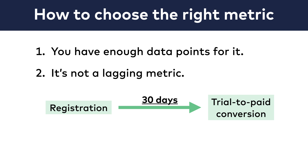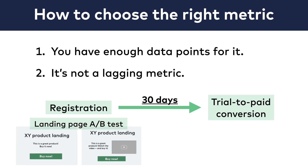The user starts the trial, but whether she will pay or not, we will only learn that 30 days later. So this is not a good number to look at in your A-B test, because you will have to wait 30 days after starting the test to get your first conversion data point. That's way too slow. So don't choose lagging metrics — try to choose a more immediate metric.